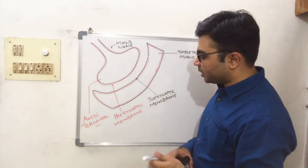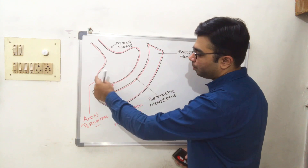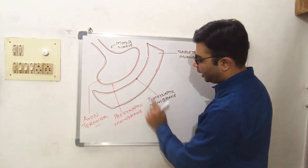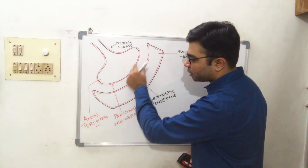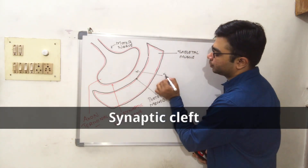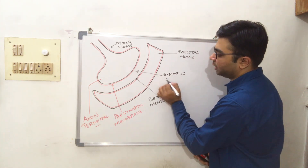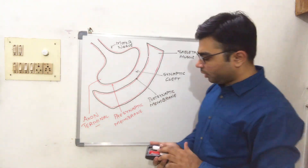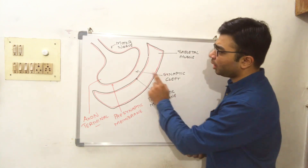The space between the presynaptic membrane — which is the end portion or membrane of the motor nerve — and the postsynaptic membrane of the muscle fiber, is termed as the synaptic cleft.